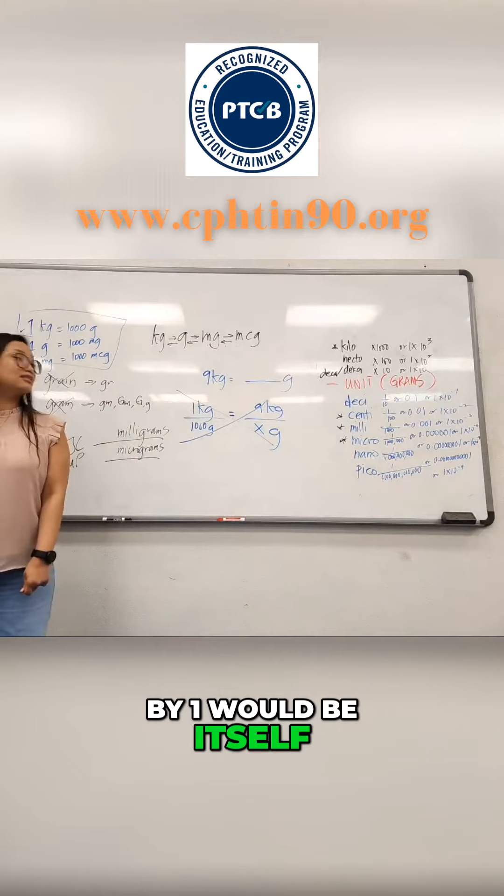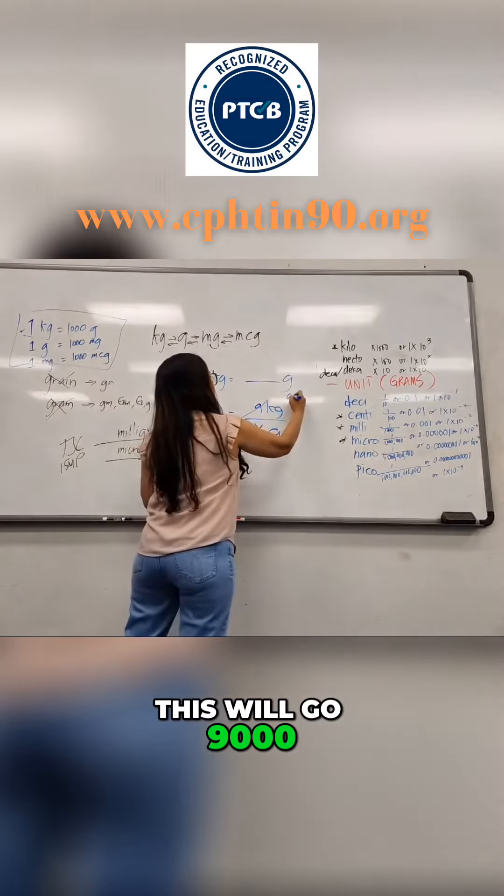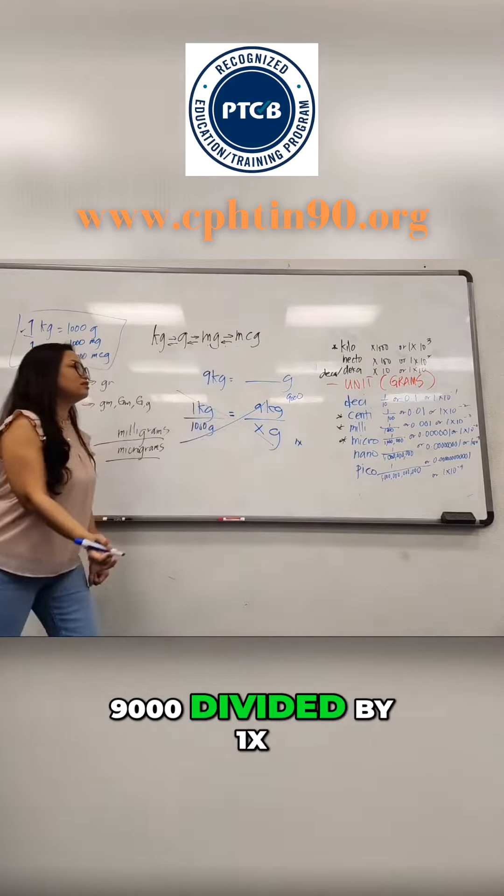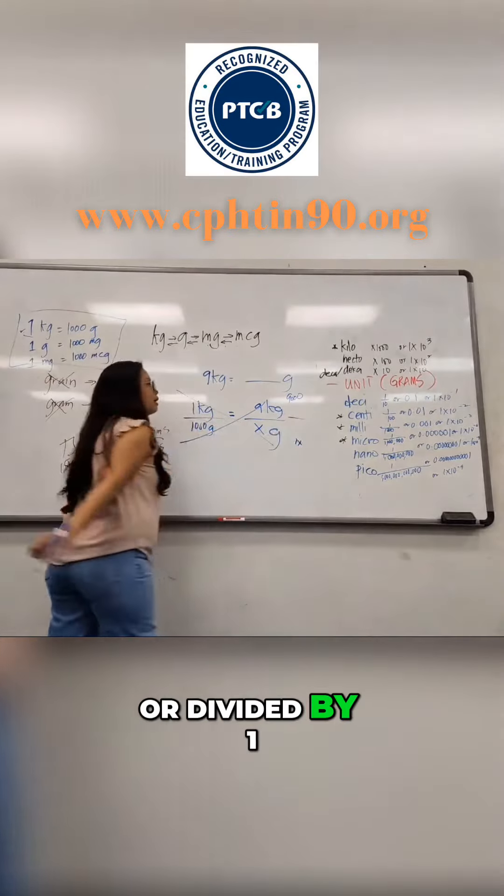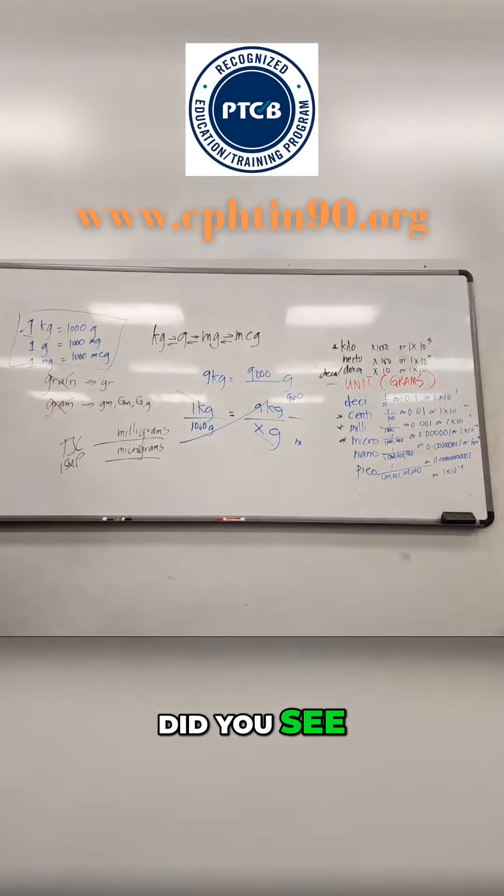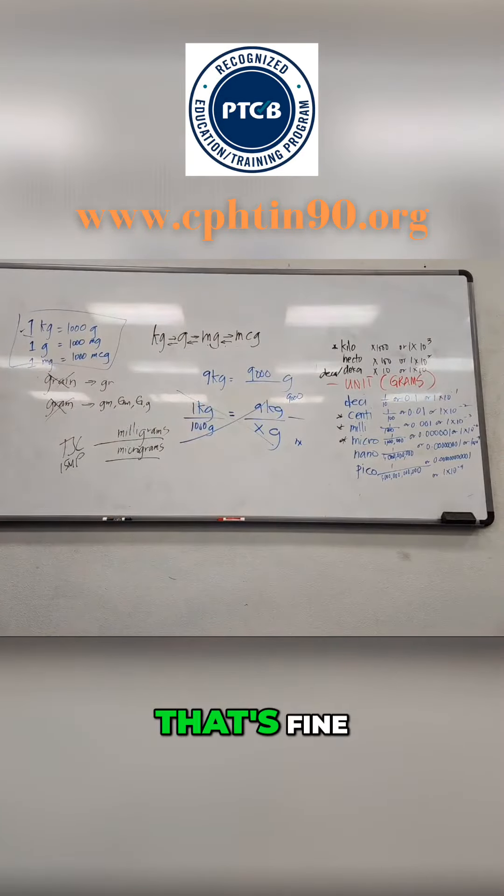This will go nine thousand, right? And this will go one X, nine thousand divided by one, or divided by one would still be nine thousand. Did you see, like in your head you did the math?